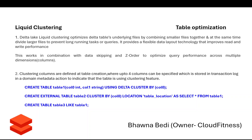Liquid clustering optimizes query performance across multiple dimensions. Liquid clustering columns are defined at table creation. To enable liquid clustering on a table, while creating the table you write: CREATE TABLE table1 USING DELTA CLUSTER BY, followed by the columns. The CLUSTER BY keyword tells Databricks that liquid clustering is enabled.